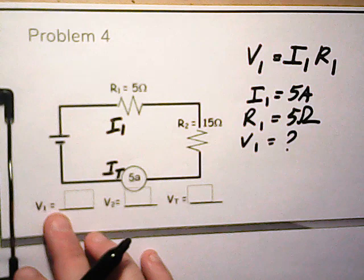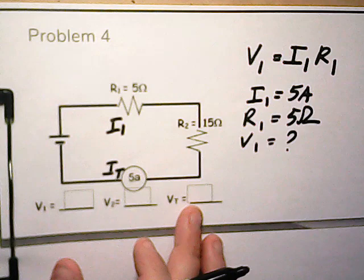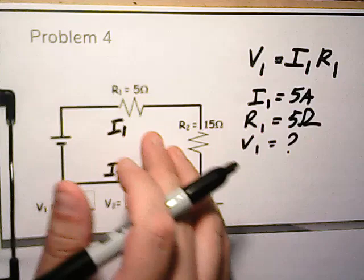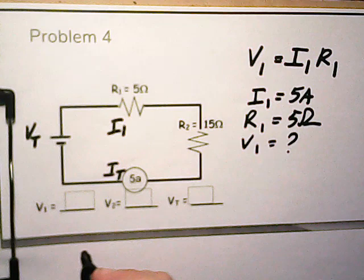For problem number four, they want us to find the voltage across number one, the voltage across number two, and the total voltage. We have number one here because it shows you R1. So this is one, this is two, and our total voltage is going to be across the battery.